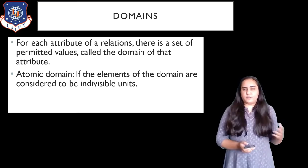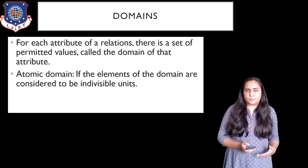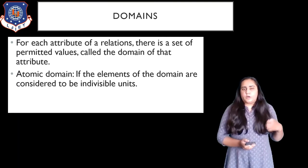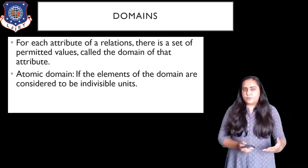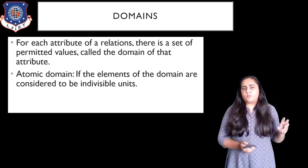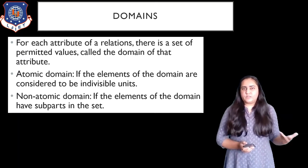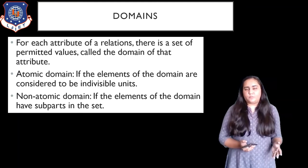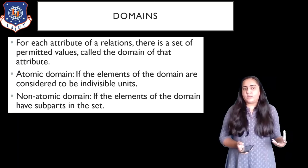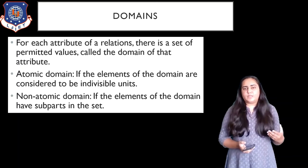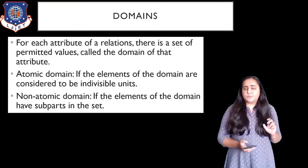There are two types of domains. The first is an atomic domain, where the elements of the domain are considered to be indivisible units — for example, columns like ID or occupation where only one value is possible. The second is a non-atomic domain, where elements have subparts. For example, a full name column can be divided into first name, last name, and middle name. Phone numbers and email IDs are also non-atomic domains because most people have multiple of each.